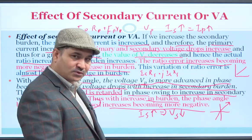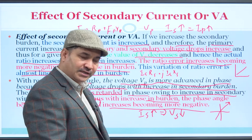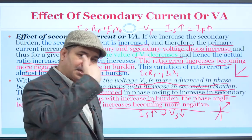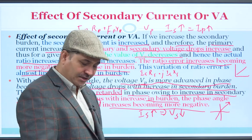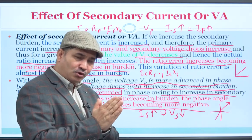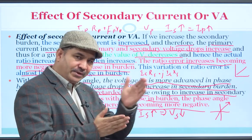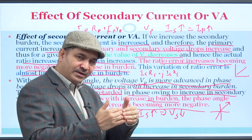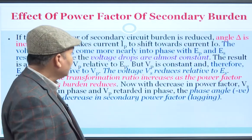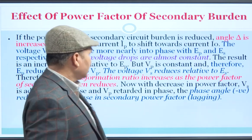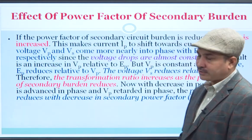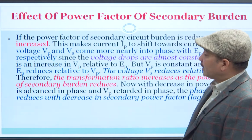Vp is the primary voltage and Vs is the secondary voltage. When you refer Vs to the primary plane, the gap between them increases as burden increases — Vp is ahead and reversed-Vs goes further behind. This can be checked with phasor diagrams and numericals, which we will see later on.